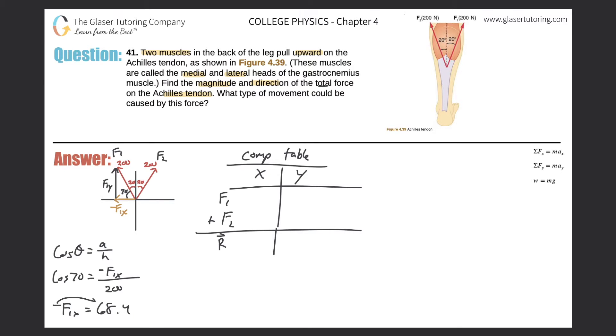Let me look to find x first. I'm going to use cosine because I know the hypotenuse, I know this angle, I'm looking for the side adjacent to that angle. So cosine of theta will be equal to the adjacent side over the hypotenuse. So cosine of 70 will equal negative F1 in the x direction divided by 200. So negative F1 in the x direction will be equal to cosine of 70 times 200, and we'll get a value of 68.4.